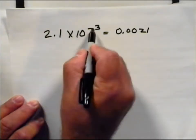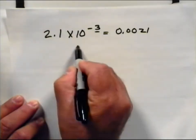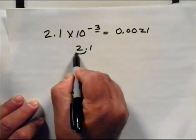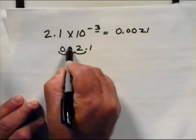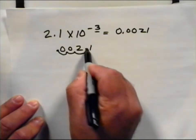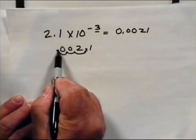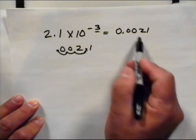And what we've done with this negative 3 is take the coefficient 2.1 and move it 3 places: 1, 2, 3, added our zeros, and that decimal goes away and we have 0.0021 as our answer.